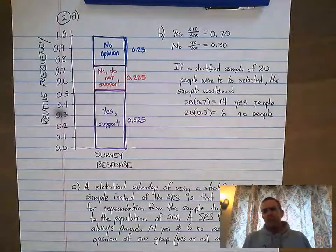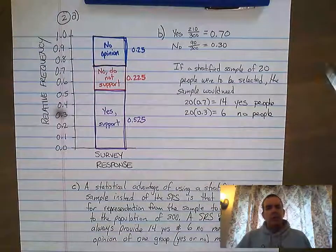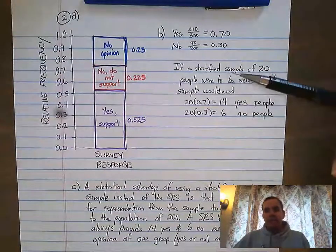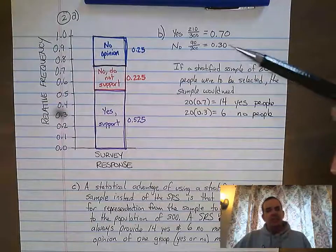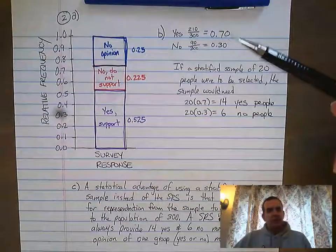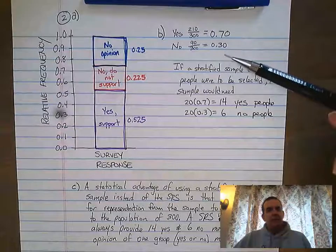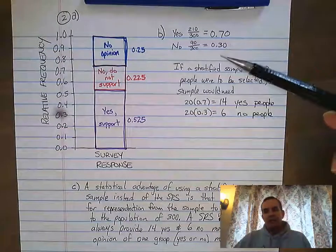The stratified sample in this case is we wanted to make sure we had proportional representation from yeses and noes. So what we did is we wanted 70% of our sample to be yes people and 30% of our sample to be no people. So we're stratifying it based on yes and no.